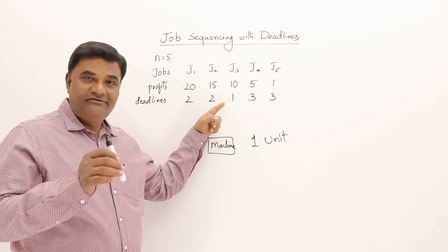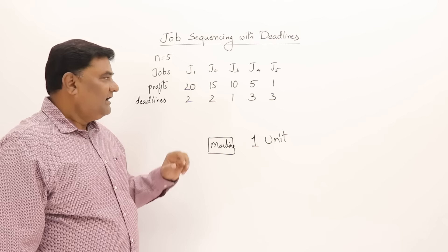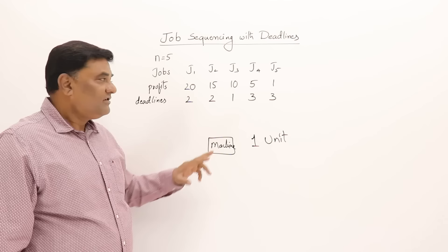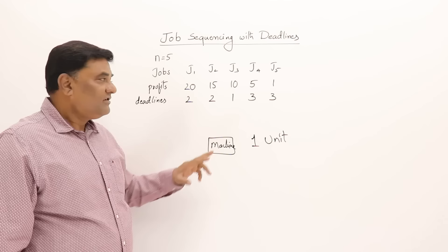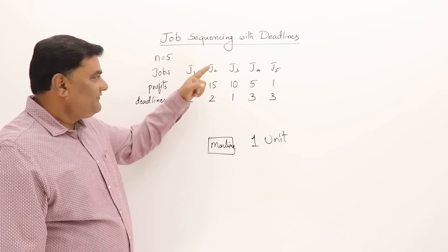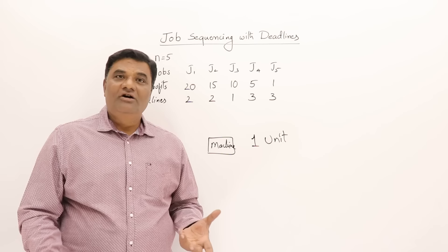One person says he wants his job done in the first hour only. Another is ready to wait for three hours — his job needs only one hour but he'll wait till 12 o'clock. Others are ready to wait till 11 or 10 o'clock. So whose job should be done first? The one with the highest profit — if one job gives 10 rupees and another gives 20 rupees, we do the higher profit job first.